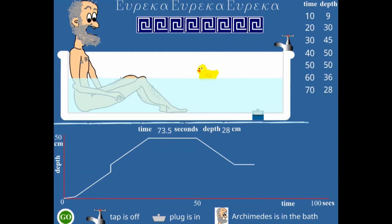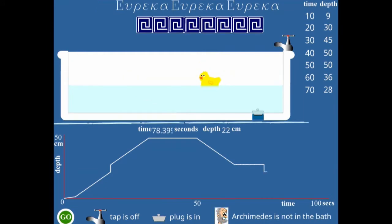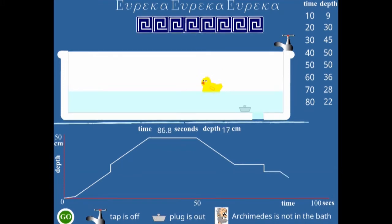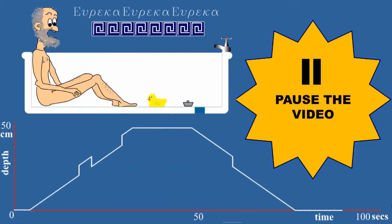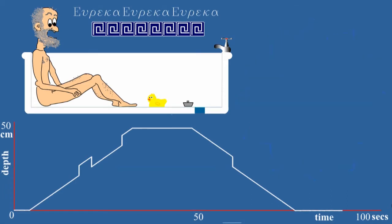It's gone flat again. The plug's back in. Oh, that sharp jump there was when Archimedes got out of the bath. And the plug's been taken out again finally. So, the last bit of the water can drain out. Okay, now pause the video. See if you can work out what happened on this occasion when Archimedes took a bath. Just by reading the distance time graph.